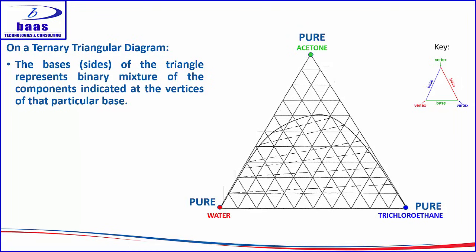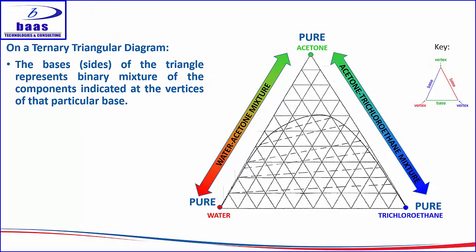The bases, or sides of the triangle, represent the binary mixture of the components indicated at the vertices of that particular base. This base represents a water-acetone binary mixture; this base represents an acetone-trichloroethane mixture; and this base represents a water-trichloroethane mixture.